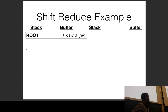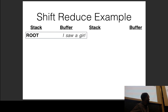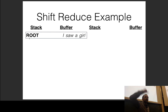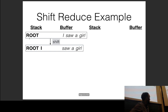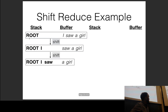Here's a quick example with 'I saw a girl.' We have a stack and a buffer of unprocessed words, with 'root' already on the stack indicating the main verb. We first do shift, moving a word from buffer to stack, then shift again — now we have root, I, and saw on the stack.